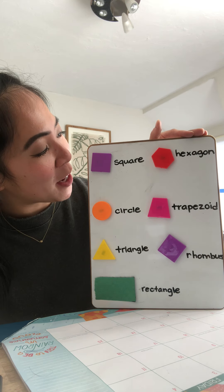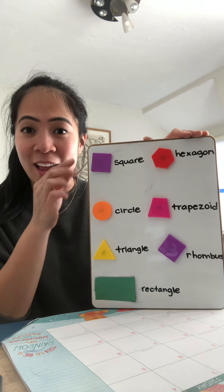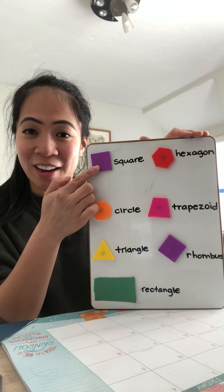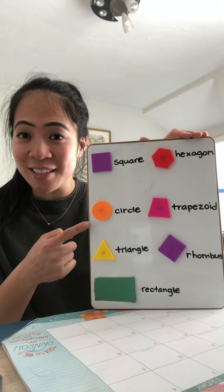Now, we are going to talk about the first shape, and this first shape is called a square. Very good. This one's an easy one.